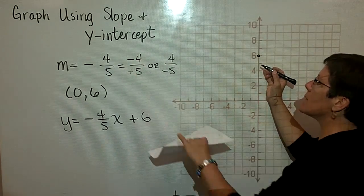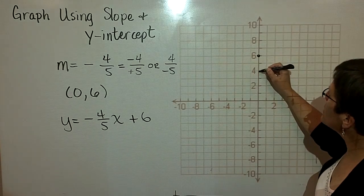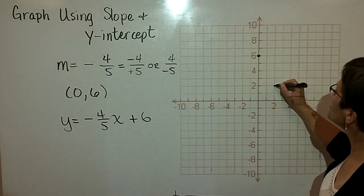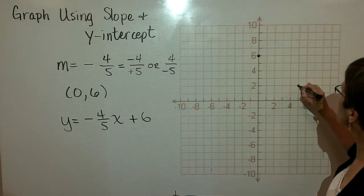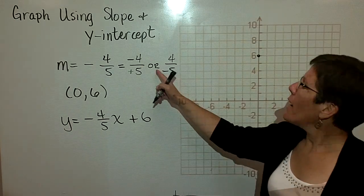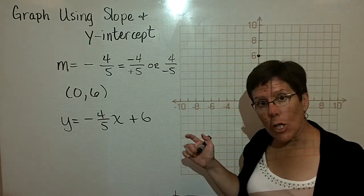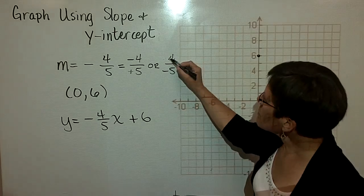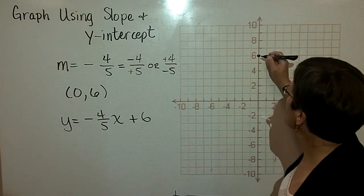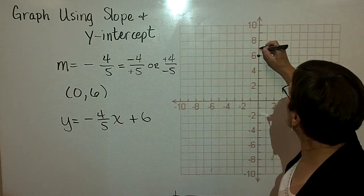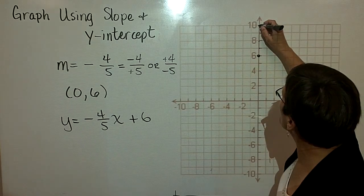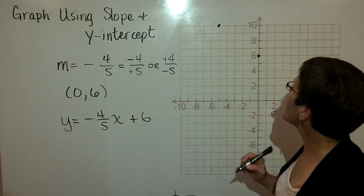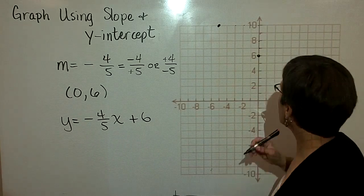So from this point right here, if I'm using that as my slope, I should go down 1, 2, 3, 4. That's my negative 4. And then go over 1, 2, 3, 4, 5 to the right. If I had chosen to use a slope of -4/5 as a positive 4 over a negative 5, then from the y-intercept, I would go up 1, 2, 3, 4, and then to the left 2, 3, 4, 5 points. And I would get the graph of the same line.